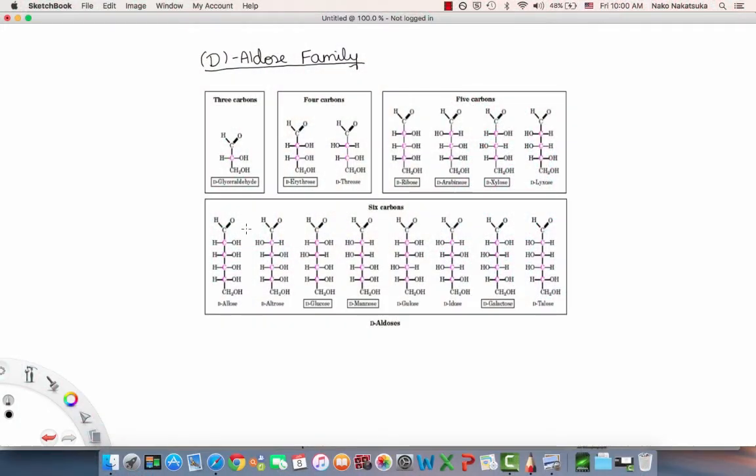Good luck with the course! So now let's talk about the D-aldose family. This is the configuration of most natural aldoses. The L-aldoses are generally unimportant, so we don't really talk about them. As you can see, just by having a different configuration, one can be very important and the other not so much.